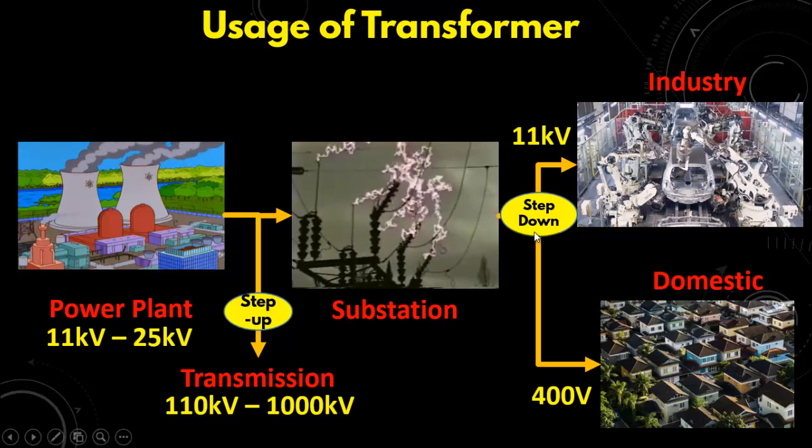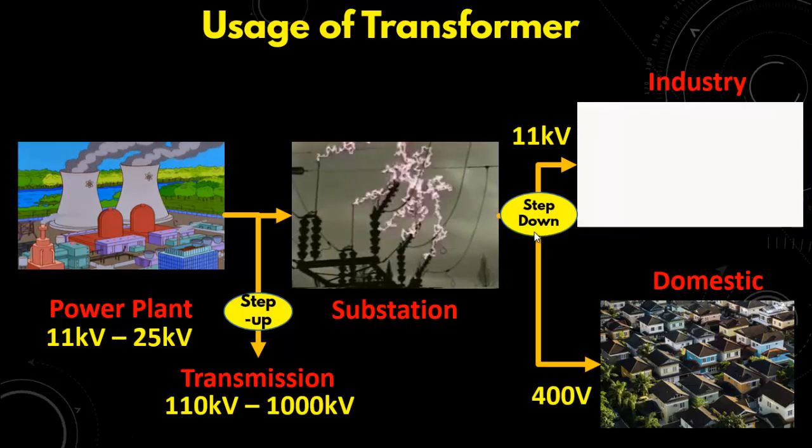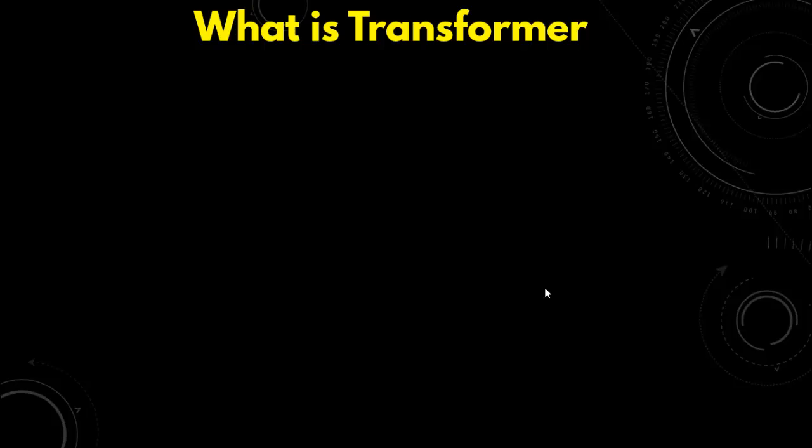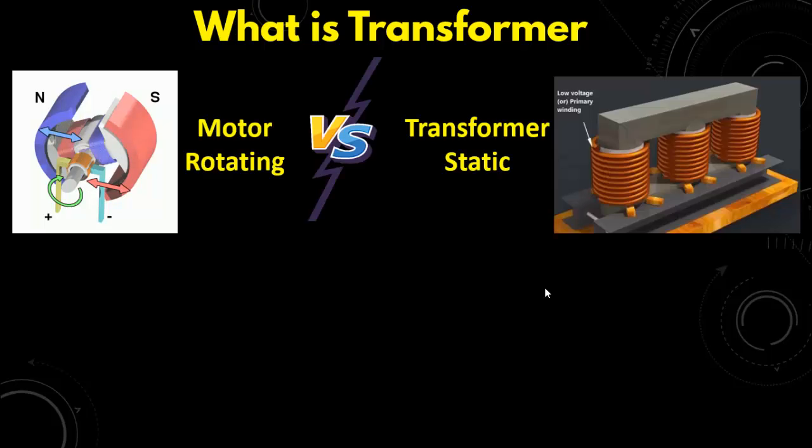Now let's see what is transformer. Here on the left I have a motor and on the right I have the transformer. As you can see that motor is rotating and unlike the motor, the transformer is a static device. The working principle of the transformer is exactly the same as of the motor, based on the Faraday law of electromagnetic induction.